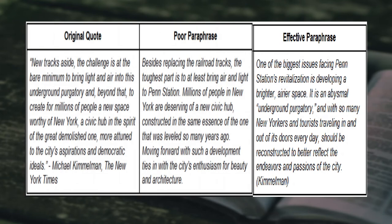Here is an example with three versions: the original quote, a poor paraphrase, and an acceptable paraphrase. The poor paraphrase has only replaced certain words without changing the word order or sentence order. The good paraphrase has changed the sentence structure, word order, added the writer's own idea based on the original, and includes a citation. Remember: if you are paraphrasing someone's work in your own words, you still need to cite with in-text citation as well as in the reference list.